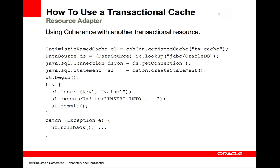Note that the Coherence connection may be just one of multiple resources enlisted with a distributed transaction. In this case, a connection to a database is also enlisted. This means that the work done on the Coherence connection will either be committed or rolled back with the work on the database connection when the transaction completes. Note that this mechanism could be used for implementing a transactional cache-aside pattern with Coherence.